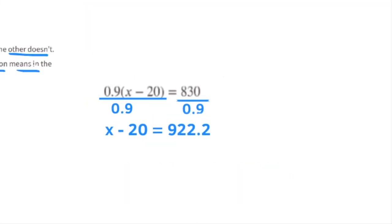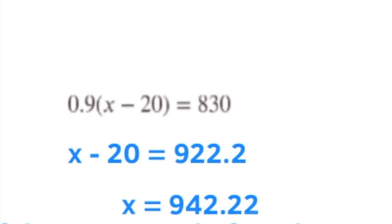For the second equation, divide both sides by 0.9. Then you're left with x minus 20 equals 922.2. Add 20 to both sides of the equal sign, and you get x equals 942.22. 942.22 represents the price of the computer before discounts.